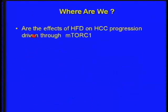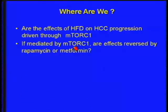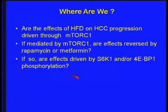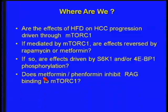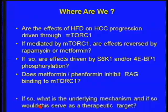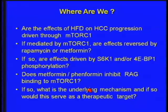So where are we? First, we'd like to know if the effects of high-fat diet on hepatocellular carcinoma progression are really driven through mTORC1, and whether these effects can be reversed by rapamycin or metformin. If so, are the effects driven by S6K1 and/or 4EBP1 phosphorylation? Those are questions we're asking right now as part of the mouse models and human cancer consortium. Does metformin and phenformin inhibit RAG binding to mTORC1? We actually just got the answer to that — we have the data now. And finally, if so, what is the underlying mechanism, and would this serve as a potential therapeutic target? We're now mechanistically trying to take apart how energy agents like phenformin are blocking this interaction downstream.